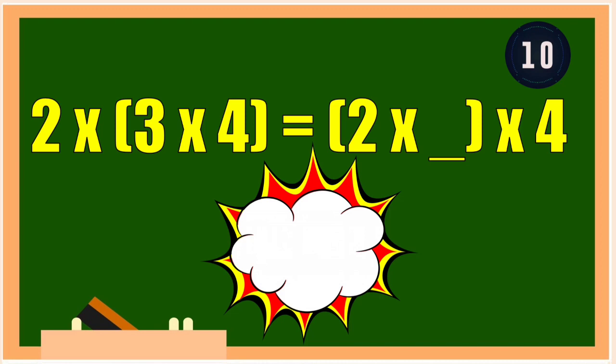Question number 2. 2 times the quantity of 3 times 4 is equal to the quantity of 2 times blank times 4. Timer starts now. The correct answer is 3. It is under associative property.